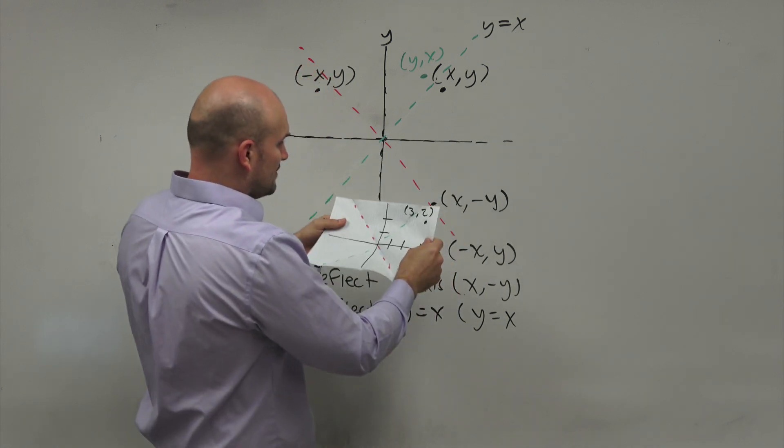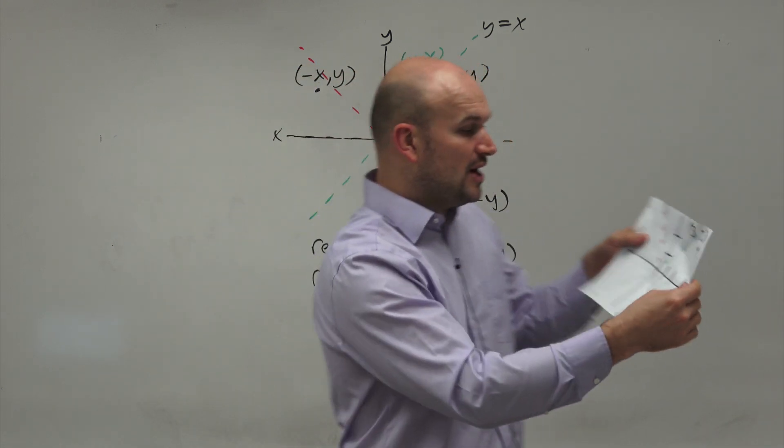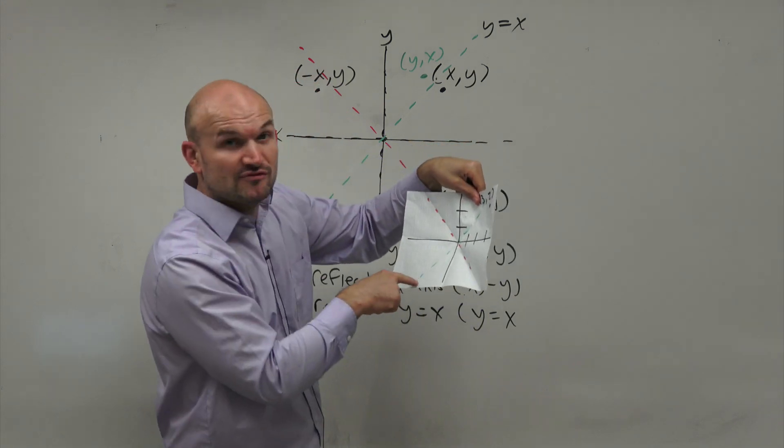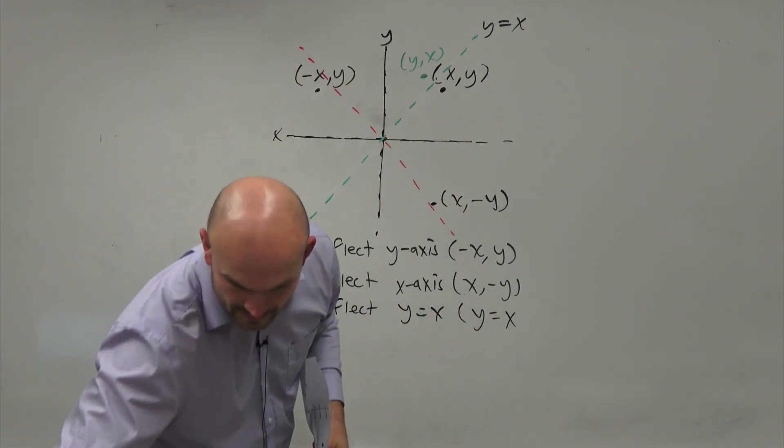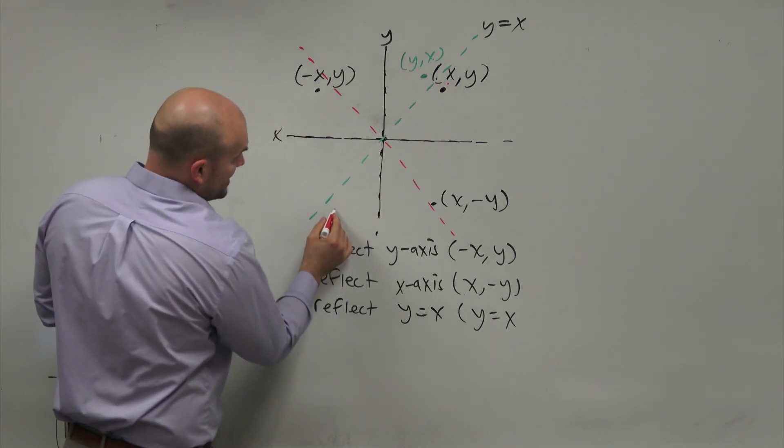So again, my X and my Y coordinates are again swapping, but also, I'm going from the first quadrant to the fourth quadrant. Because if you take this point and you reflect it, it's going to be somewhere down here.